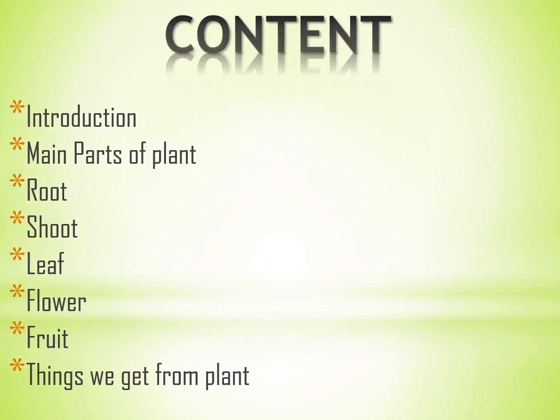In this chapter, we will learn: Introduction, Main Parts of Plant, Root, Shoot, Leaf, Flower, Fruit, and Things we get from plants.